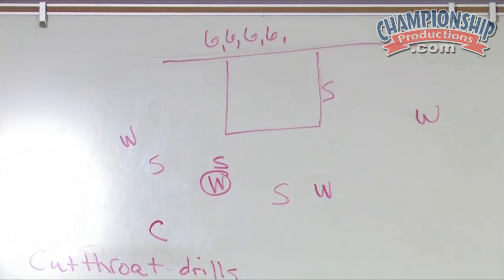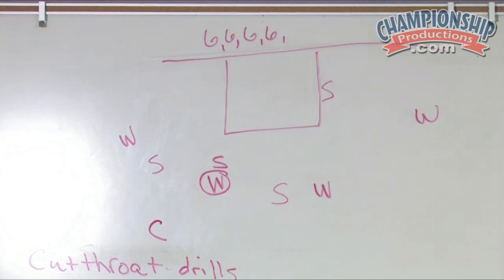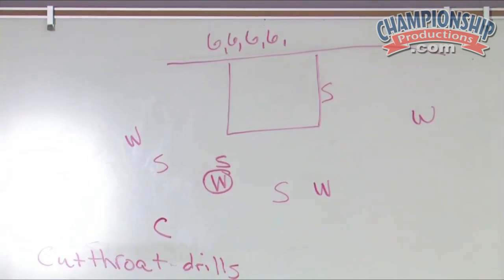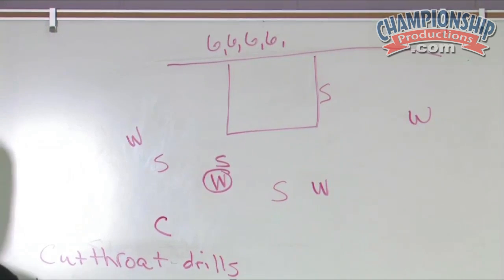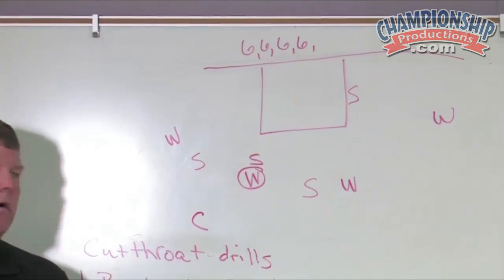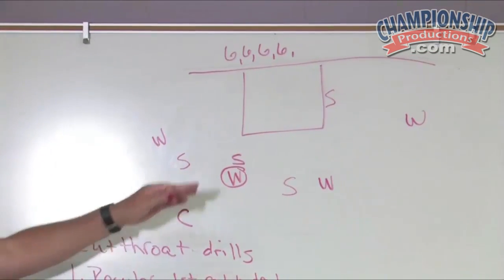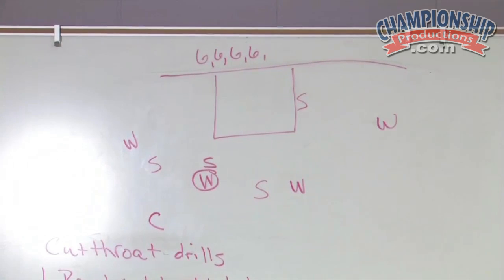It works on our ball pressure and dead ball denial, which we will do no matter what defense we're in. If we get the offense to pick up its dribble and have a dead ball, we are going to deny everywhere. So the first pass is dead, and then we just play basketball.